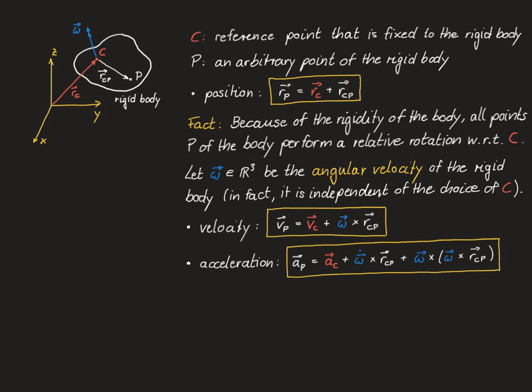Similarly, the acceleration of an arbitrary point p is the acceleration of the reference point c, plus the angular acceleration (time derivative of omega) cross rcp, plus omega cross (omega cross rcp).